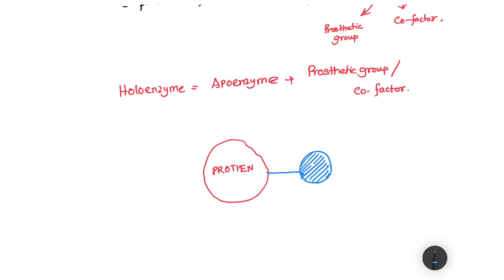Now in this protein part, if we have something attached to it with strong, stable interactions—maybe covalent or non-covalent strong, stable interactions—then this thing will be known as a prosthetic group.